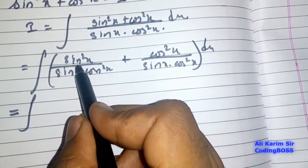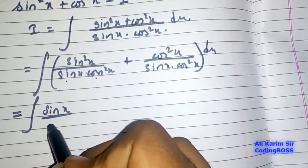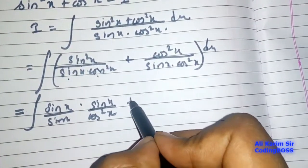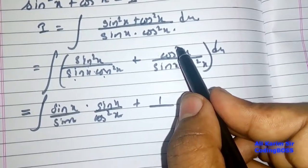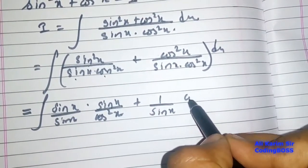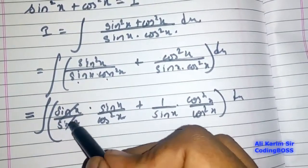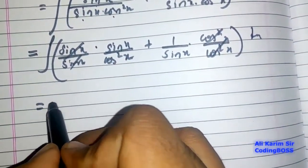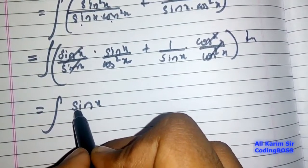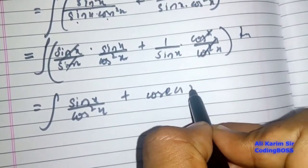There is sin squared x, one sin x, and cos squared x, so it can be written as sin x upon cos squared x. And here, cos squared x upon cos squared x — again applying dx to the entire term. After dividing, the problem becomes sin x upon cos squared x plus 1 upon sin x.